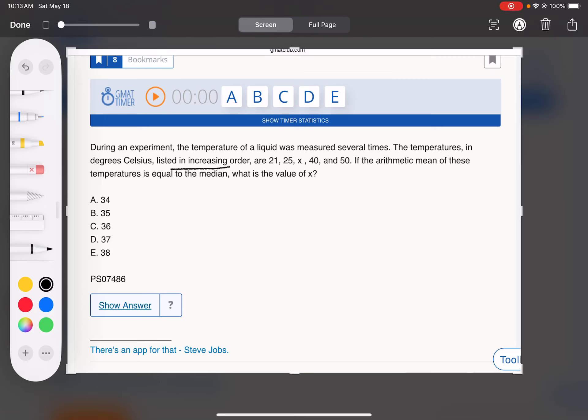Okay, temperatures are listed in increasing order. That helps a lot because X isn't some floater that can go around. We know the median. If these are listed in increasing order, the median is X.